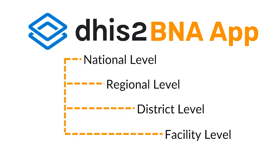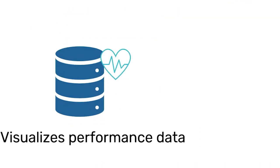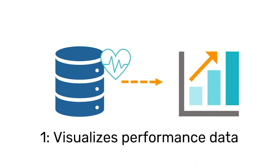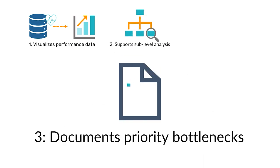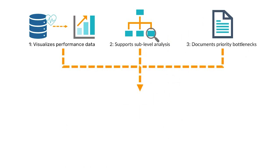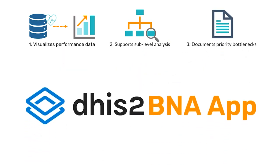The BNA app supports bottleneck analysis through a simple, configurable visualizer in three steps. First, it visualizes performance data on the supply, demand, and quality — the determinants of the effective coverage of interventions. Then second, it supports sub-level analysis to identify whether bottlenecks are systemic or localized within certain coverage areas. And third, it provides a tool to document the priority bottlenecks and what is causing them — all within an easy-to-use application accessible within DHIS2.